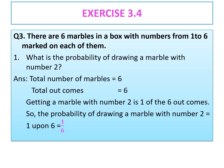Now let's do question number 3. There are 6 marbles in a box with numbers from 1 to 6 marked on each of them. What is the probability of drawing a marble with number 2? We have 6 marbles only, each marble numbered 1 to 6. Total number of marbles is 6, that means total outcomes is 6. Getting a marble with number 2 is 1 of the 6 outcomes. The probability of drawing a marble with number 2 is equal to 1 upon 6.